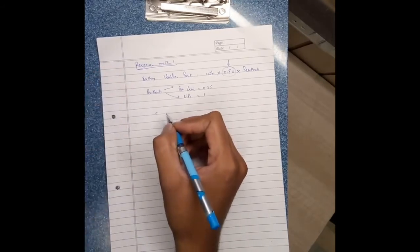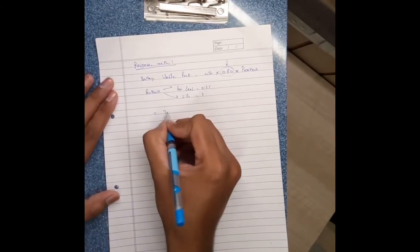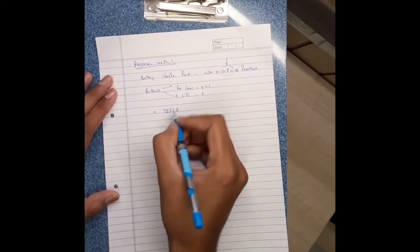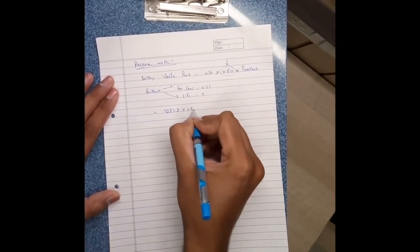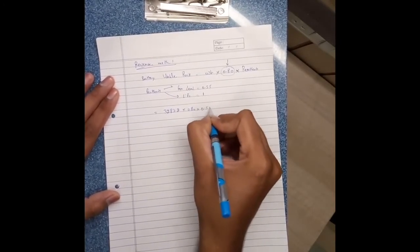Value of watt-hour equals to 3282 into 0.55.